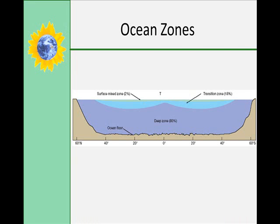Generally, the ocean is layered into three zones: the shallow surface mixed zone, the transition zone, and the deep zone. In the shallow surface mixed zone, water temperatures are the warmest on the surface. It's a high energy zone because waves, currents, and tides typically happen here. They extend 300 to 450 meters in depth and consist of approximately 2% of the ocean's water. Part of this zone is also referred to as the photic zone, because plants and phytoplankton can grow and photosynthesize here since light can reach them.